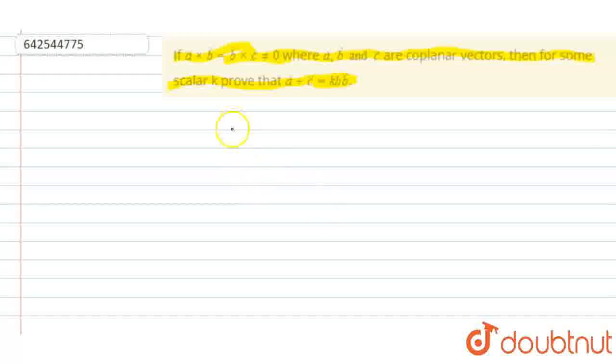Basically, we have been given the relationship in the question. That is, a cross b vector is equal to b cross c vector. This can be further written as a cross b vector minus b cross c vector which is equal to 0.